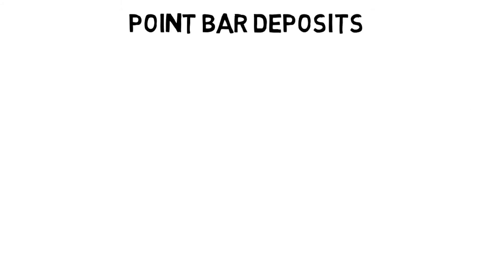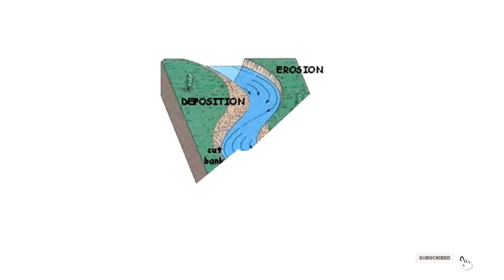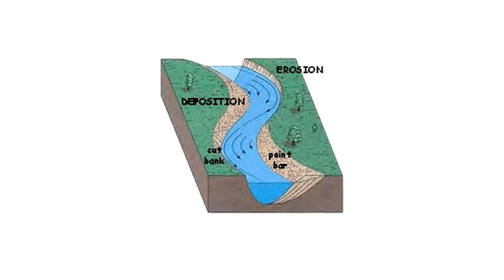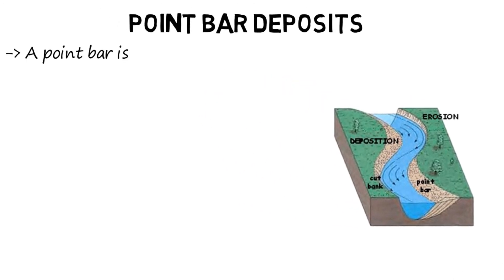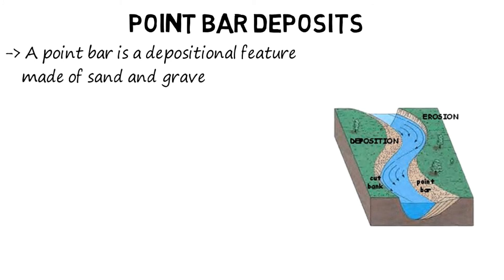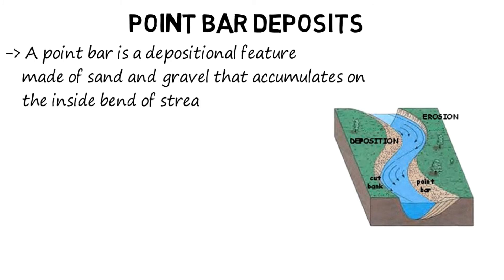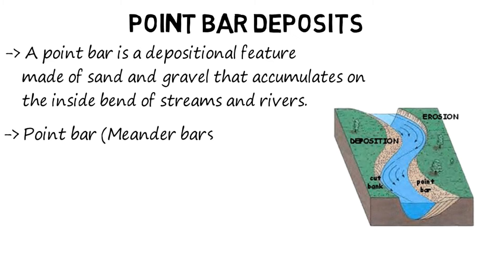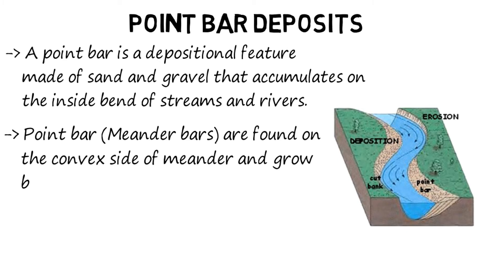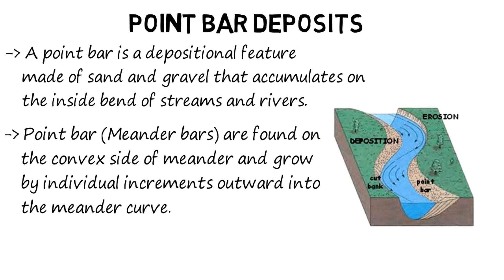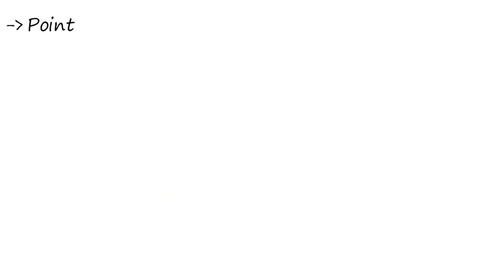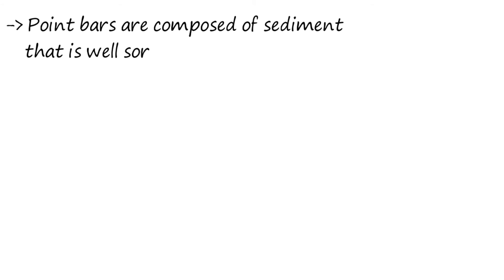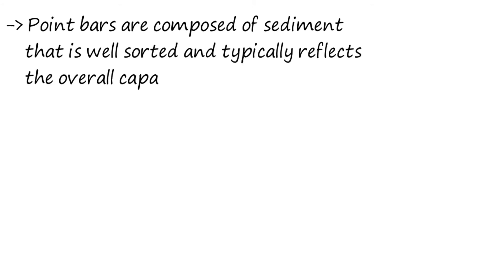Point bar deposits. A point bar is a depositional feature made of sand and gravel that accumulates on the inside bend of streams and rivers. Point bars, or meander bars, are found on the convex side of a meander and grow by individual increments outward into the meander curve. Point bars are composed of sediment that is well sorted and typically reflects the overall capacity of the stream.